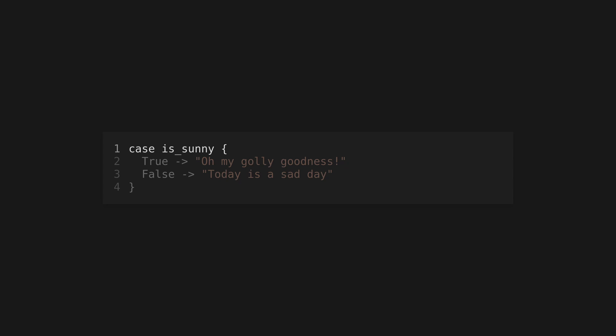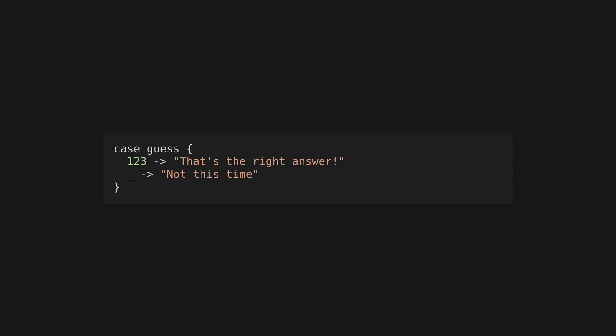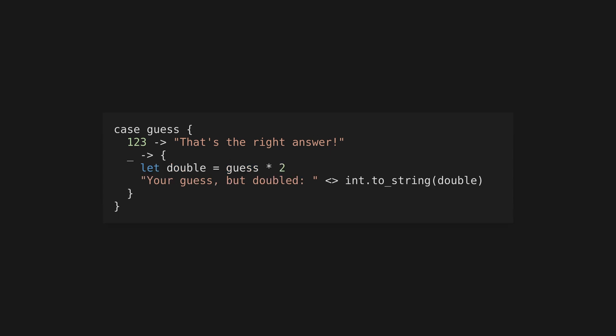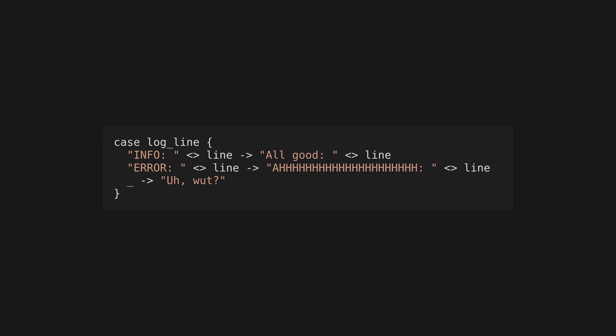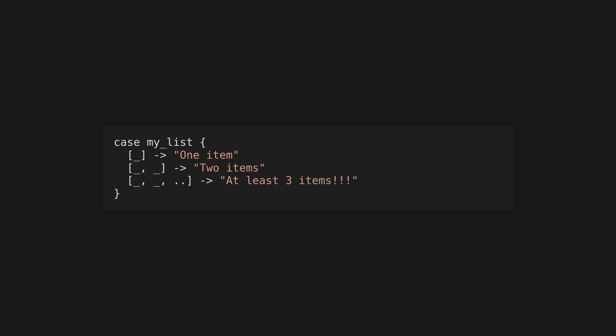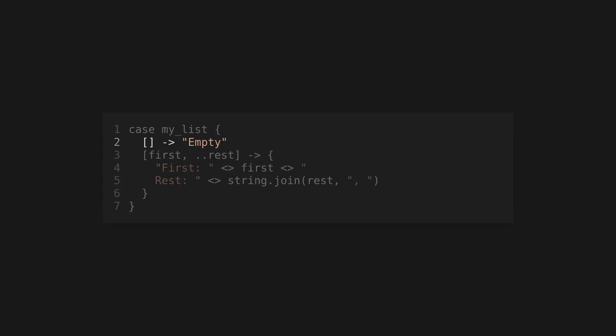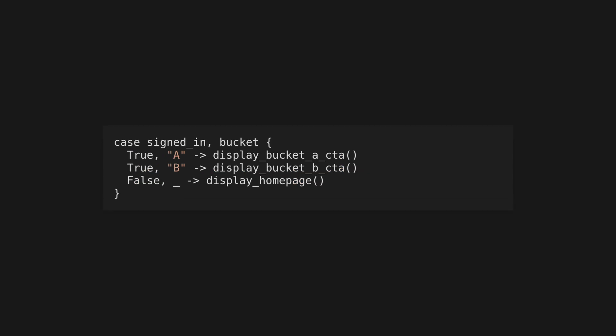There are no if-else clauses in Gleam, so branching control flow is managed through pattern matching. Use a case statement to start pattern matching — the patterns defined inside the block will be matched against the value following the case keyword. Use an underscore to define the default case. Branches can also be blocks and will evaluate to the last expression. Provide a variable name as a pattern to match against any value. Match against the string prefix using the concatenation operator. When matching against lists, an underscore indicates a single item of any value, whereas the spread pattern matches the rest of the list. You can also use a pipe to accept multiple patterns for a branch, or pattern match against multiple values at a time by comma separating the subject values.